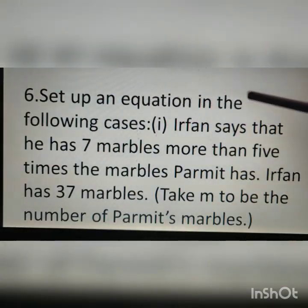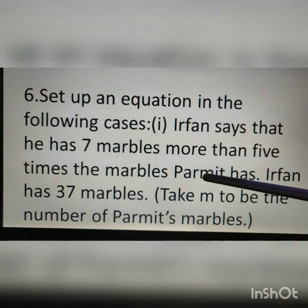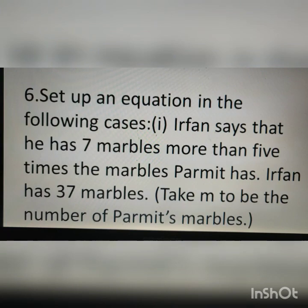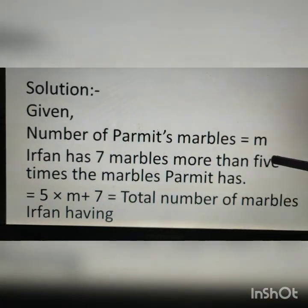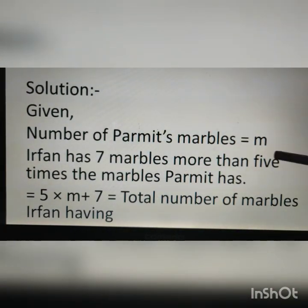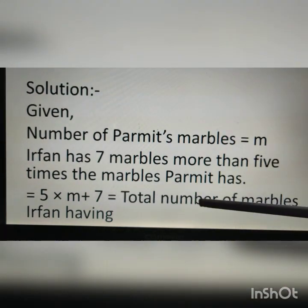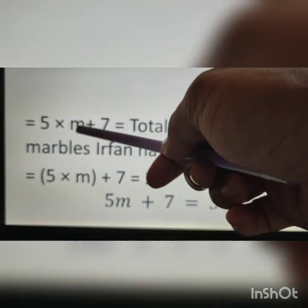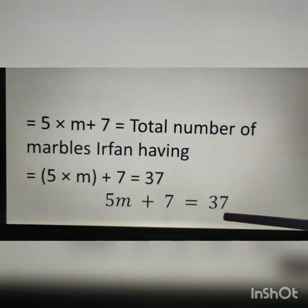Question number 6: set up an equation in the following cases. First question: Irfan says that he has 7 marbles more than 5 times the marbles Parmit has. Irfan has 37 marbles. Take m to be the number of Parmit's marbles. Solution: let the number of Parmit's marbles be m. 5 times the marbles Parmit has is 5 into m, and 7 more means plus 7. Therefore, 5m plus 7 is equal to 37 is the equation.